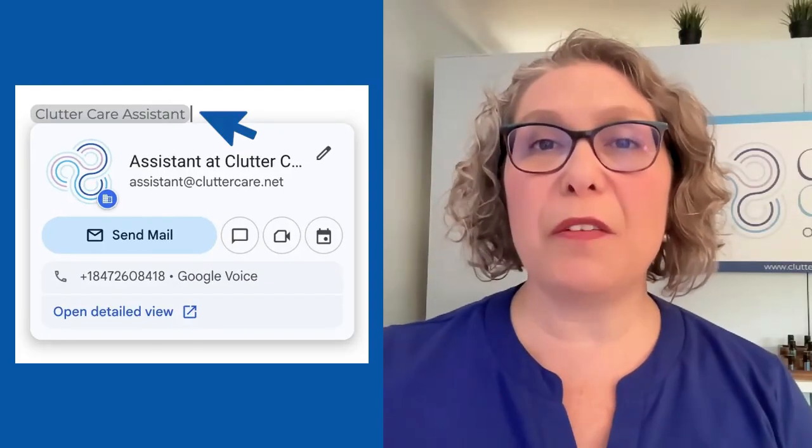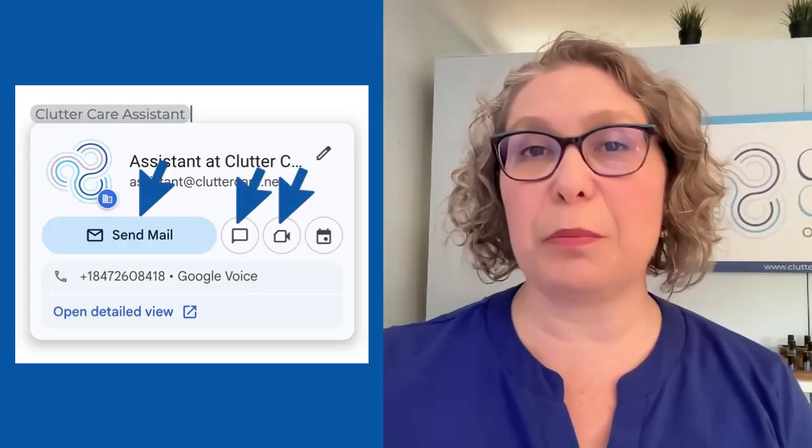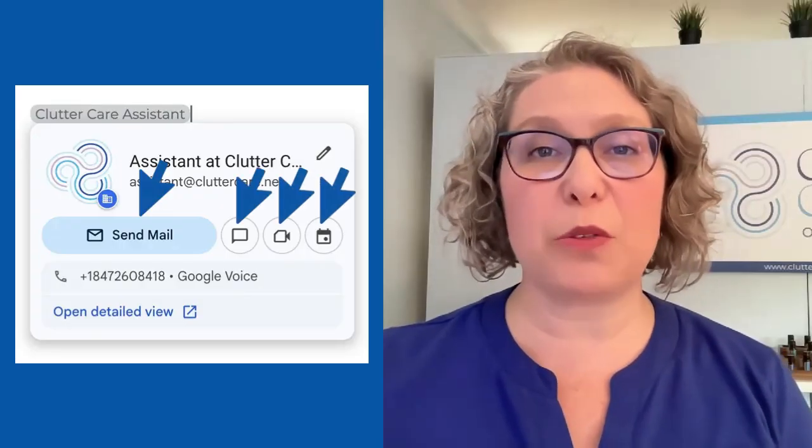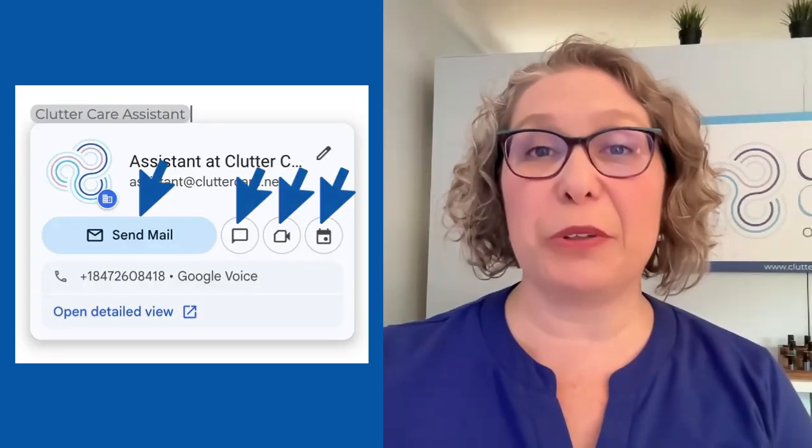Once you hover over it and their information appears, you can easily email them, start a Google Chat, a Google Meet, or schedule an event with them — all from that Smart Chip in your Google Doc. No more searching for somebody's email or phone number in your contacts; it's right there in your document. This is the integration between apps that Google is so good at and that they continue to improve.